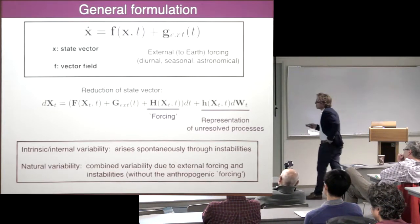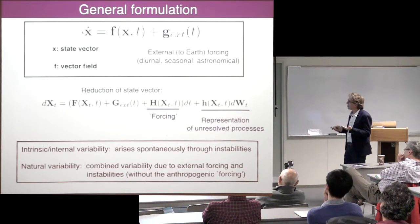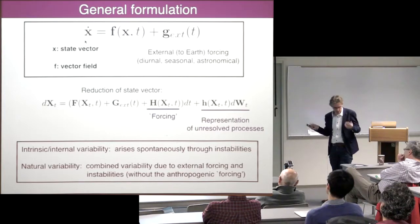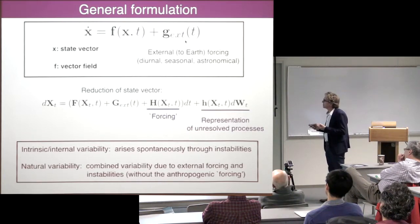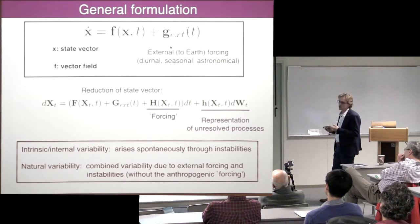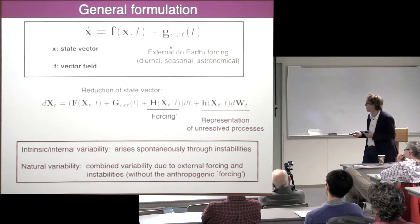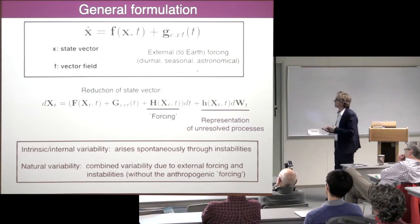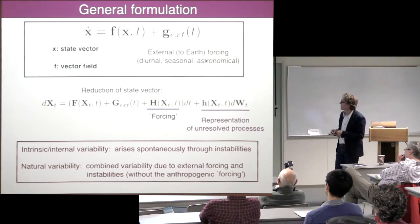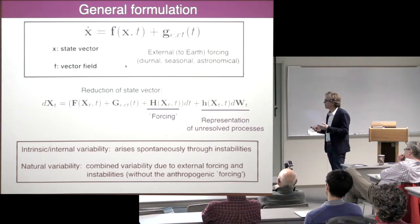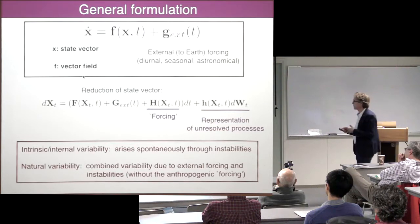So what is the more general formulation? You can always write a climate model where you have a very large state vector, which would include ocean, atmosphere, land, ice, sea ice, vegetation, and carbon cycle processes. You can always write it in a particular way where you have some external forcing related to forcing from outside the Earth — solar forcing — such as daily variations, seasonal variations, and astronomical variations associated with changing the orbital parameters of the Earth. You don't look at all those components but use a reduction of the state vector. CO2, considered in many climate models, is treated as a forcing to the system because the change in CO2 is much faster than the natural processes.